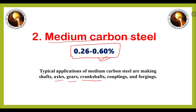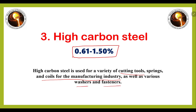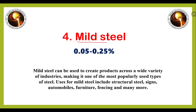Typical applications of medium carbon steels are making shafts, axles, gears, crankshafts, couplings, and forgings. The third one is high carbon steel, which has a carbon percentage of 0.61 to 1.50 percent. High carbon steel is used for a variety of cutting tools, springs, and coils for manufacturing industries, as well as for various washers and fasteners.